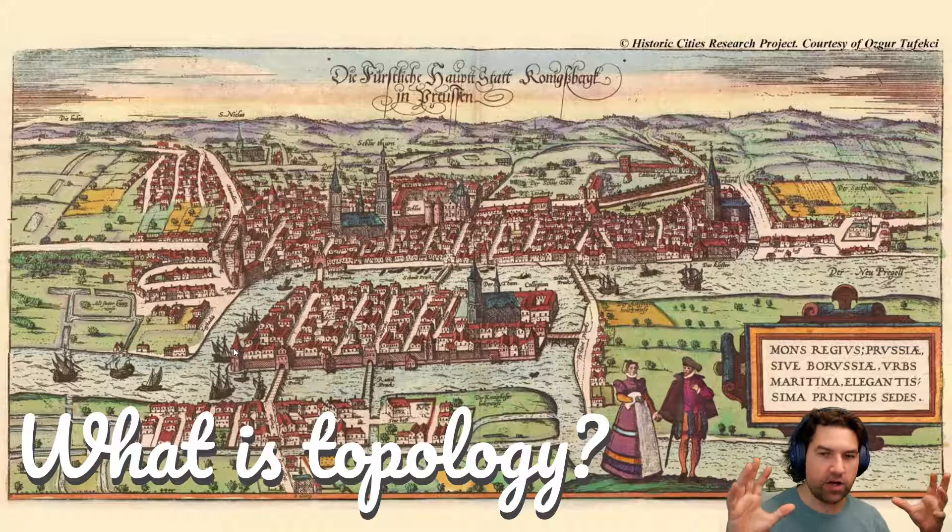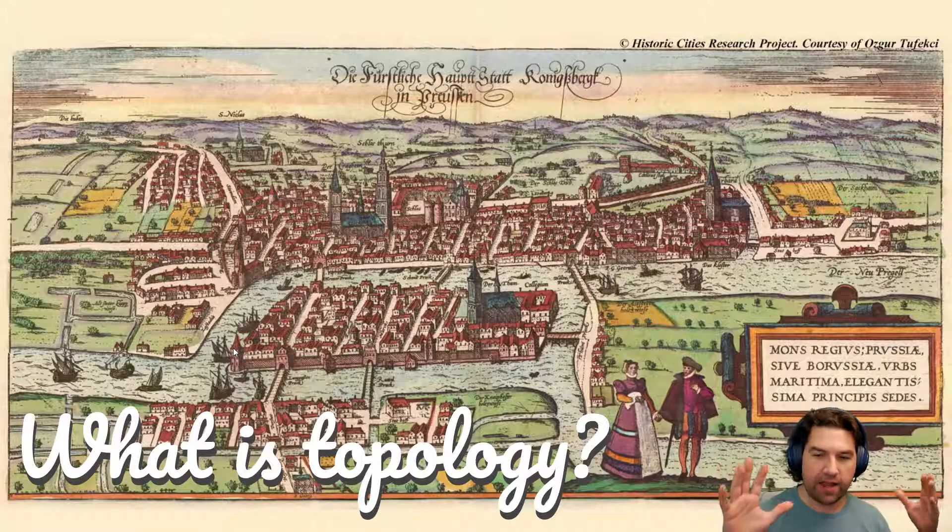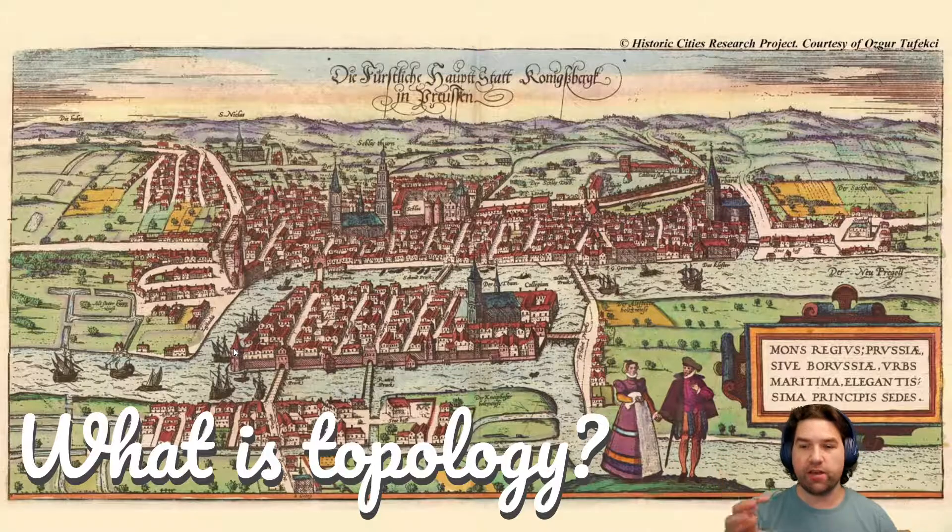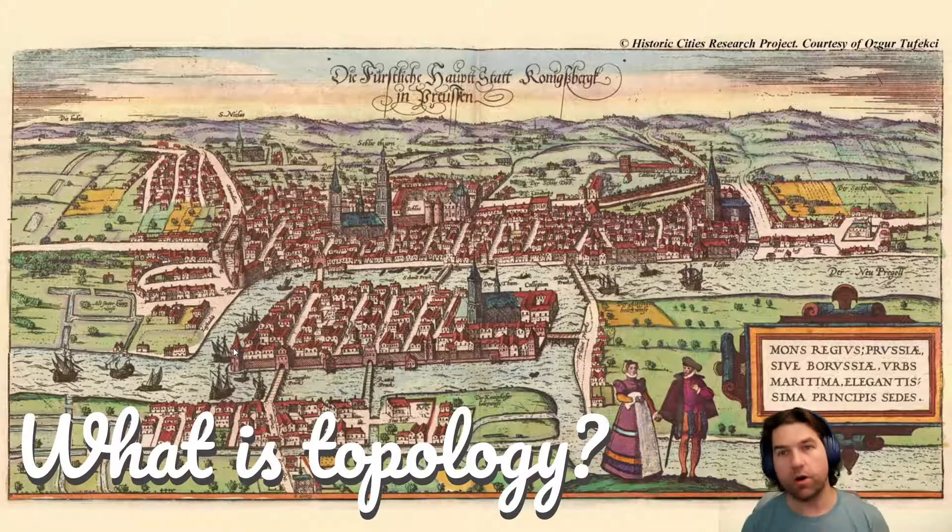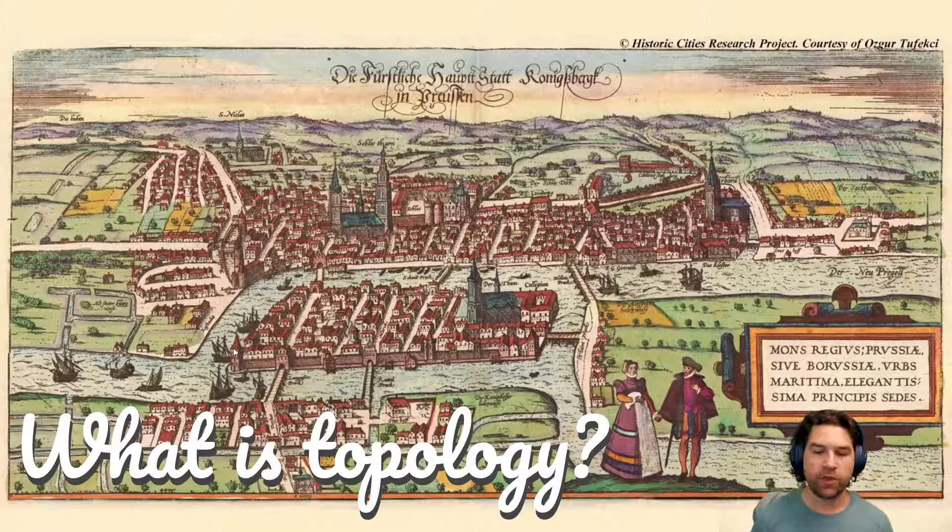This was a town in Austria, Königsberg, and they had seven bridges aligned throughout this town. They had a couple canals going around the central part, and people on Sundays would walk around and try to see could they end up back where they started, crossing each bridge only once. This was an interesting problem and a fun game, but it eventually turned into something of a logic puzzle.